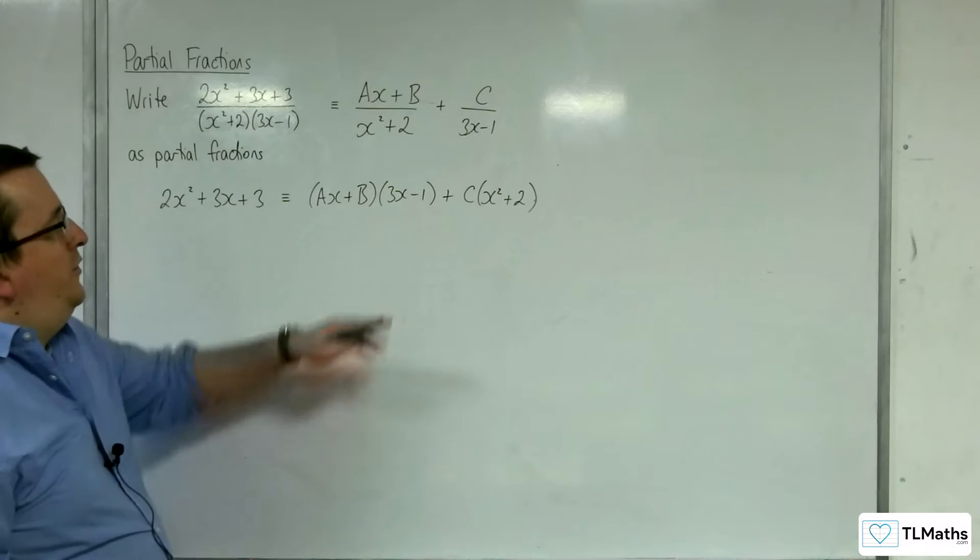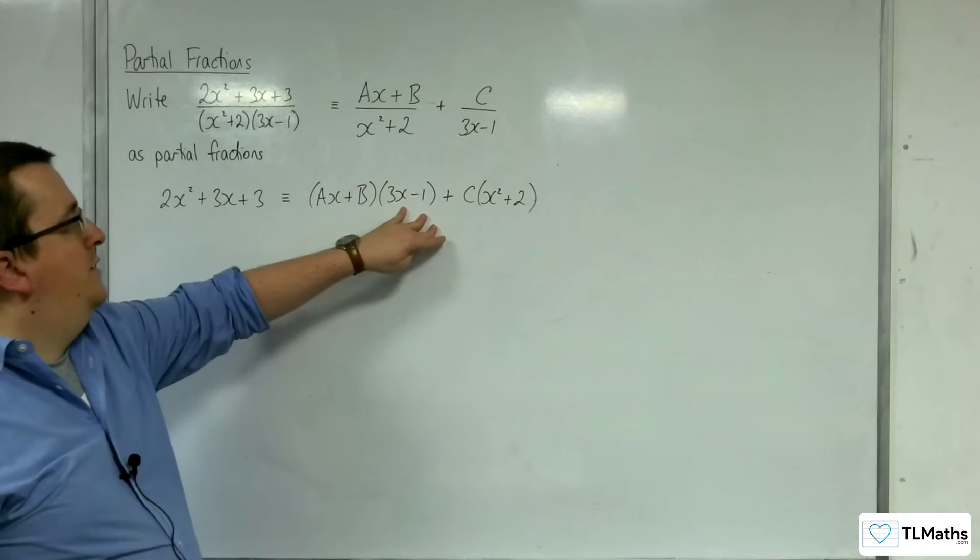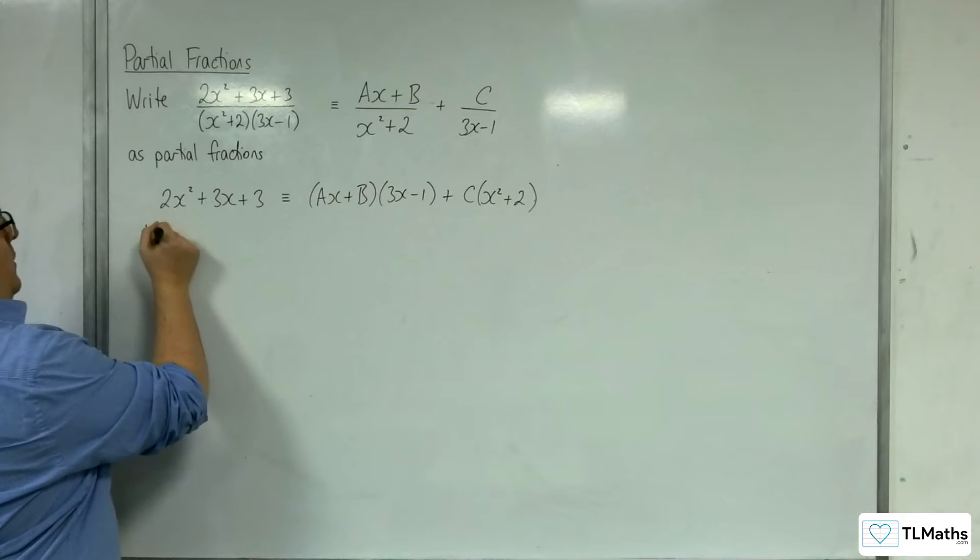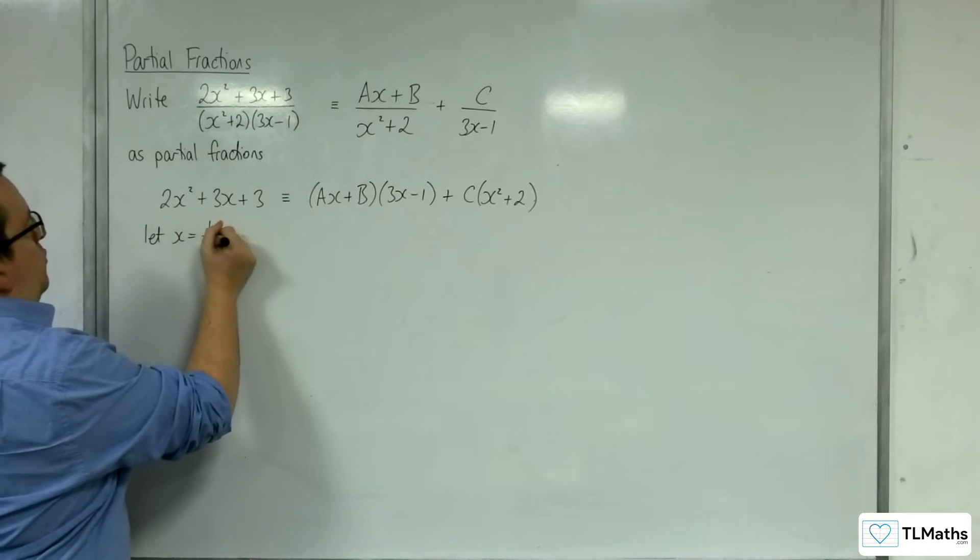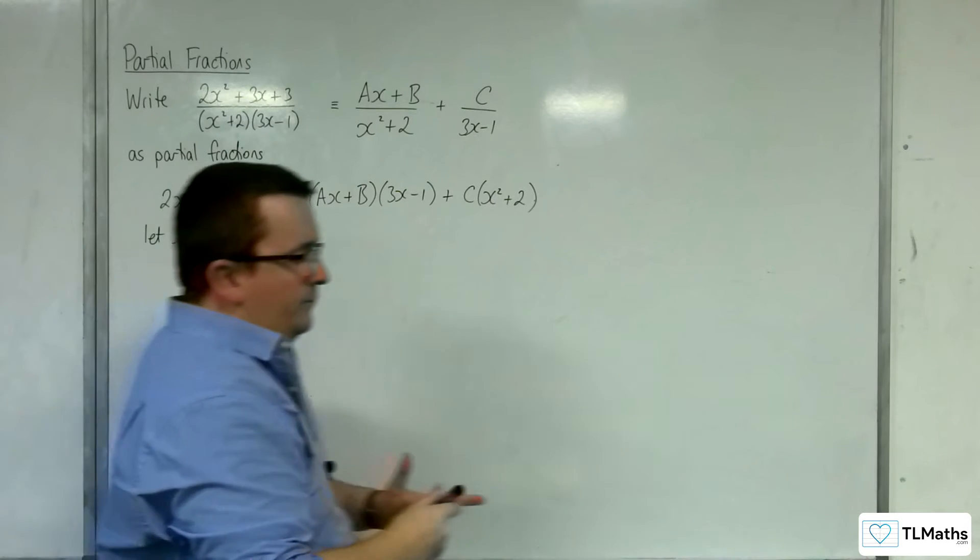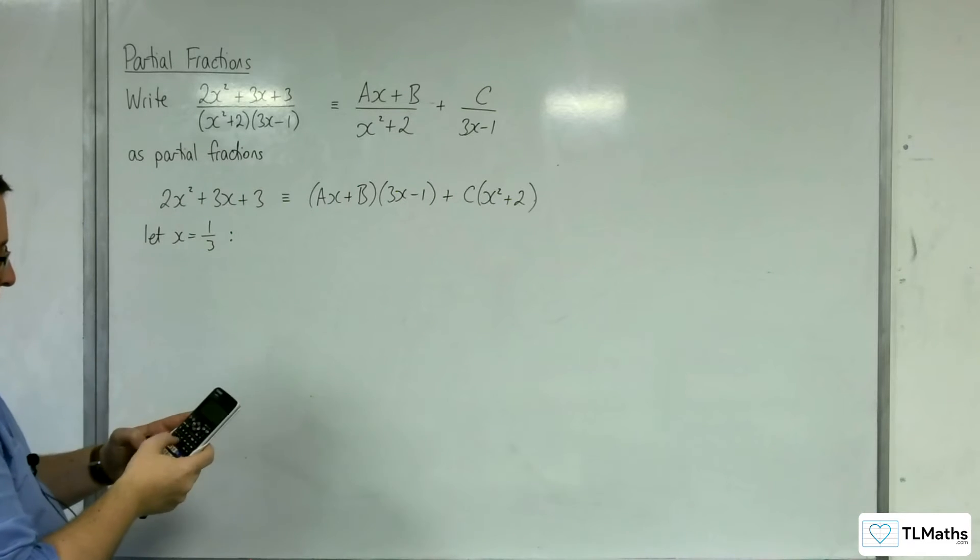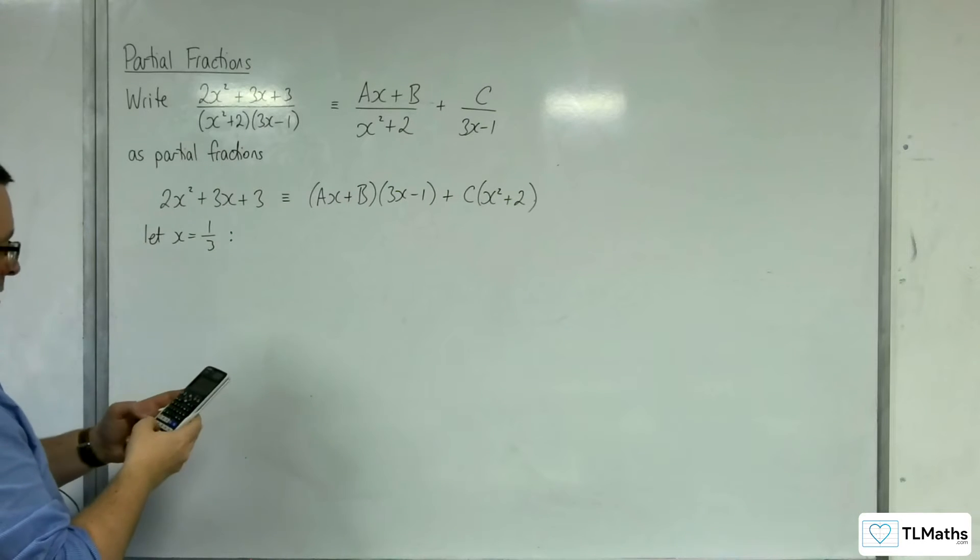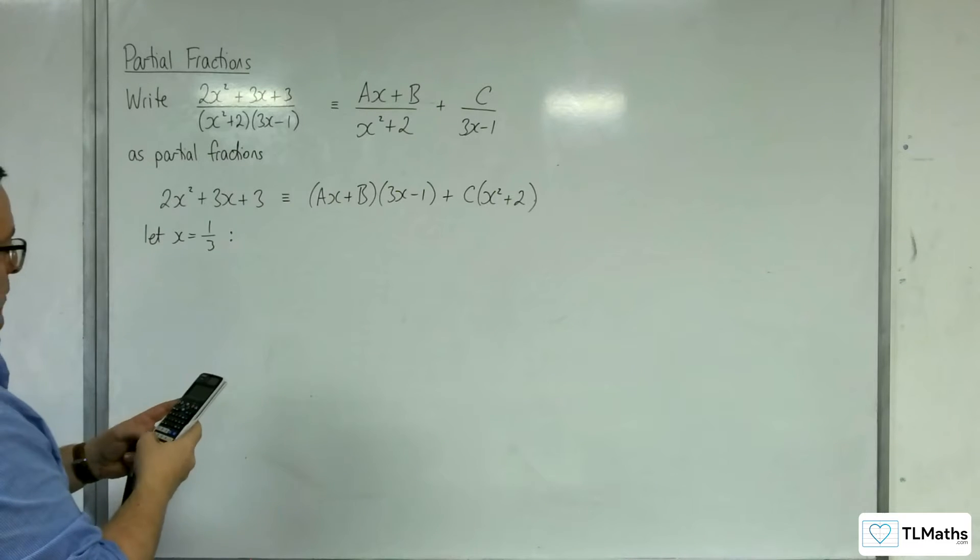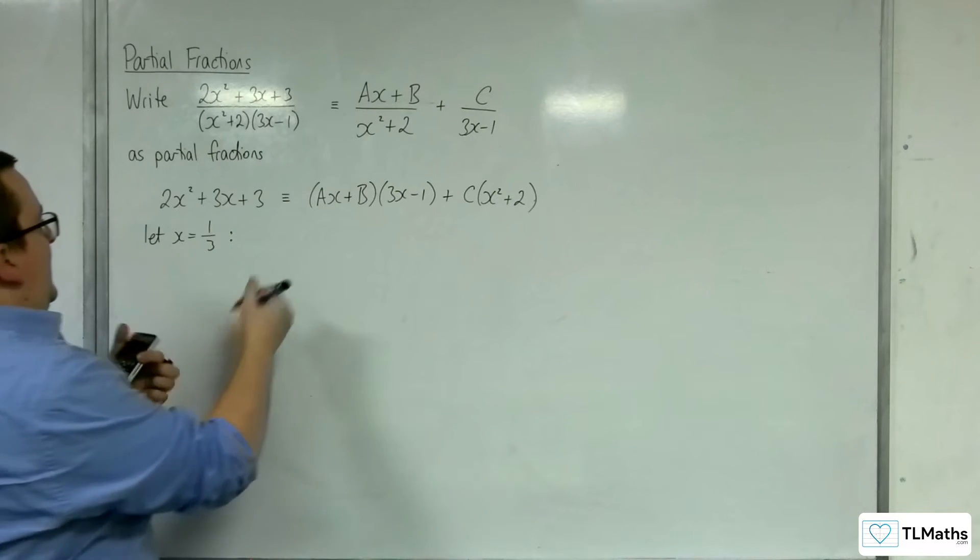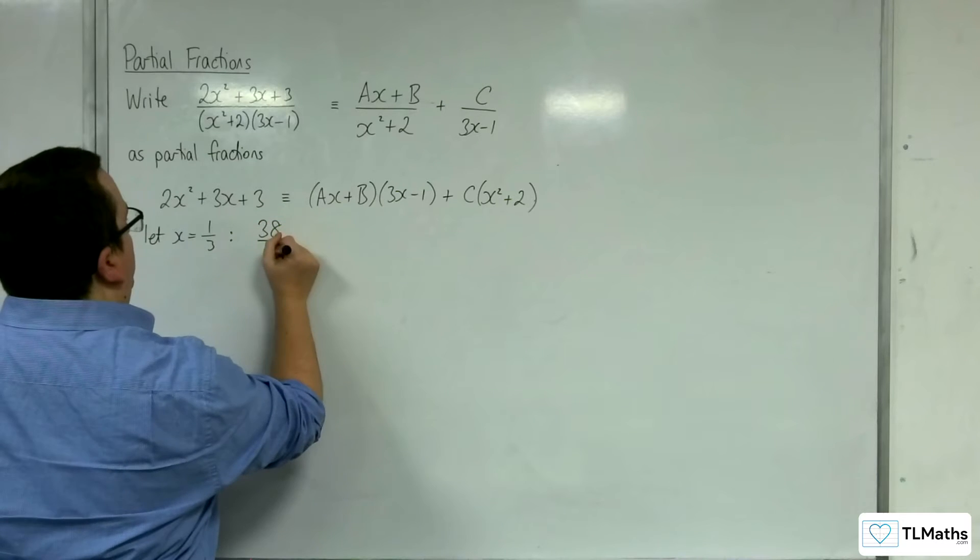So the first thing I would do is substitute in x equals 1 third, knock out that bracket. So let x be equal to 1 third. I've got to substitute that into the left-hand side: 2 lots of 1 third squared plus 3 lots of 1 third plus 3. And we get 38 ninths on the left-hand side.